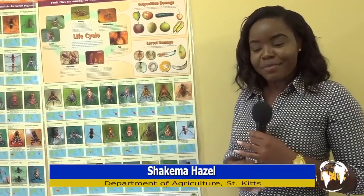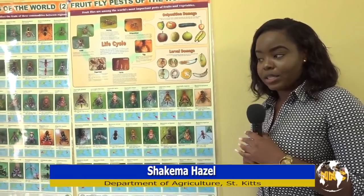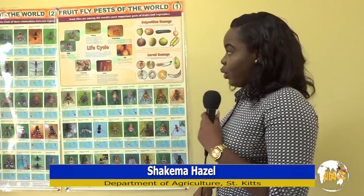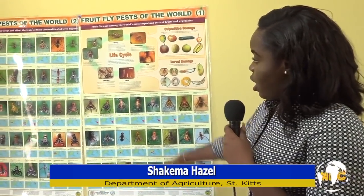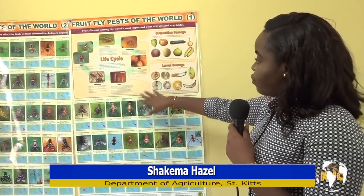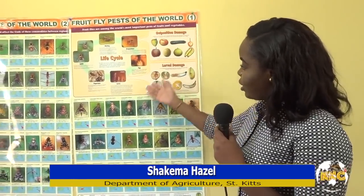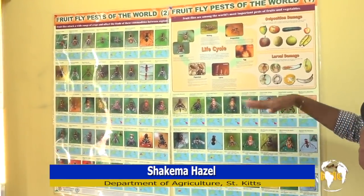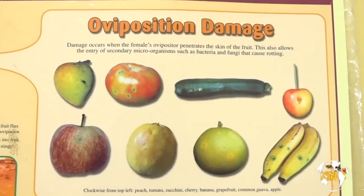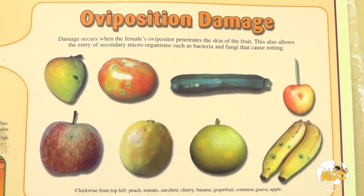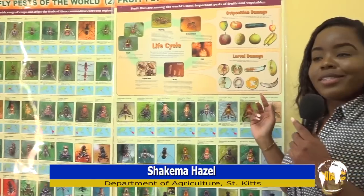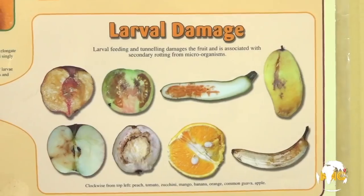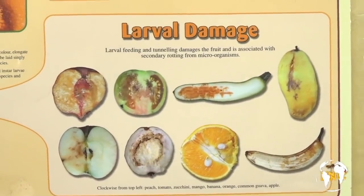There are about 5,000 fruit fly species, but 500 of those are deemed to be pests. This is just showing you the life cycle of the fruit fly. We have the egg, larva, puparium, adult mating, and oviposition. Oviposition is basically when the fruit fly uses its ovipositor to puncture the food and lays its eggs, and then the eggs will turn into larvae, and then the larvae will feed on the inside of the fruit.